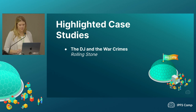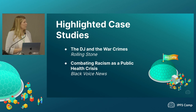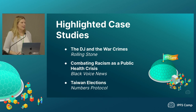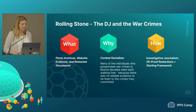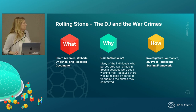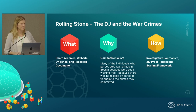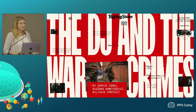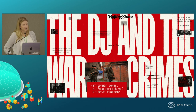Let's talk about what this looks like in action. The first case study is 'The DJ and the War Crimes,' published with Rolling Stone. We created photo archives, collected website evidence, and redacted documents — all to combat denialism. Decades ago, individuals perpetrating war crimes in Bosnia were still walking free with no reliable evidence to bring them to justice. So we used investigative journalism, ZK proofs to do those redactions provably, and the Starling framework of capture, store, verify. This piece was headed up at Starling Lab by Sophia Jones, centered around photographs taken by Ron Haviv — a great photojournalist — 30 years ago in Vijeljina, Bosnia.